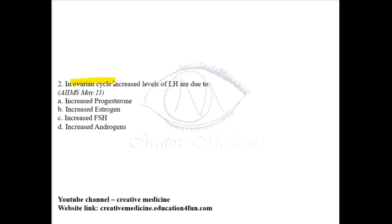In the ovarian cycle, increased levels of LH are due to increased estrogen. A minimum of 200 pg of estrogen is required for the increase in luteinizing hormone.